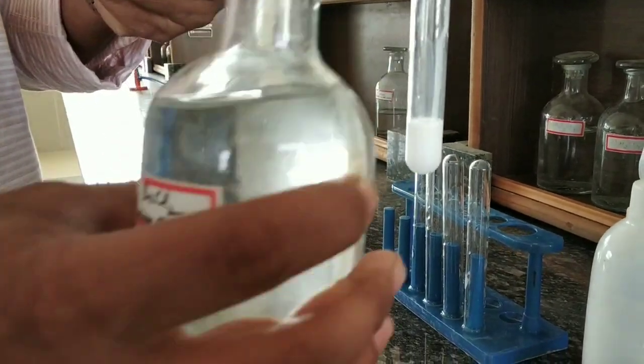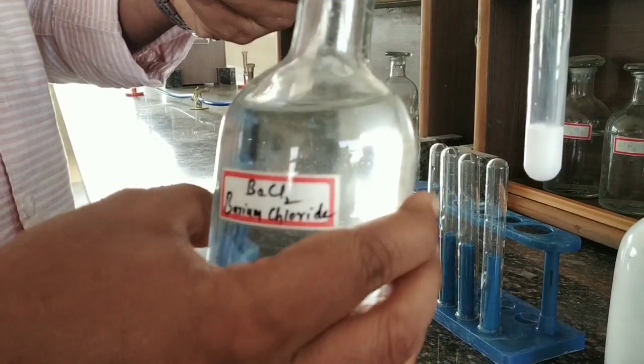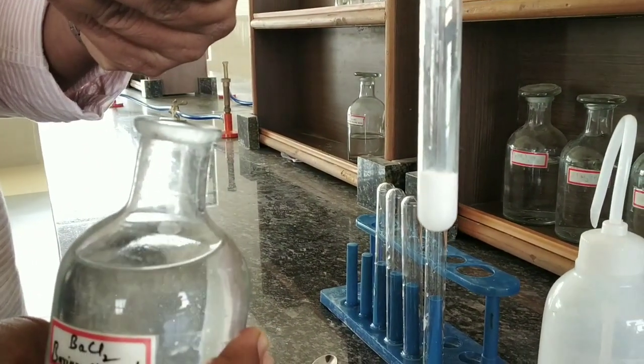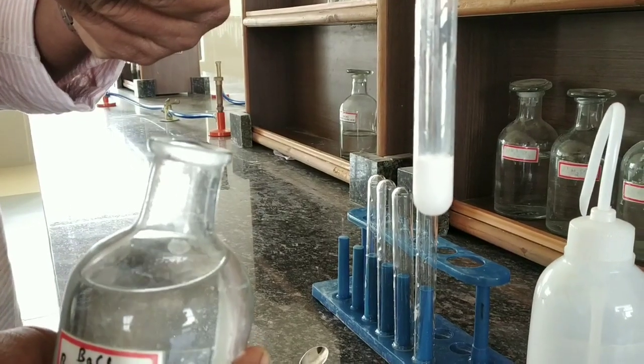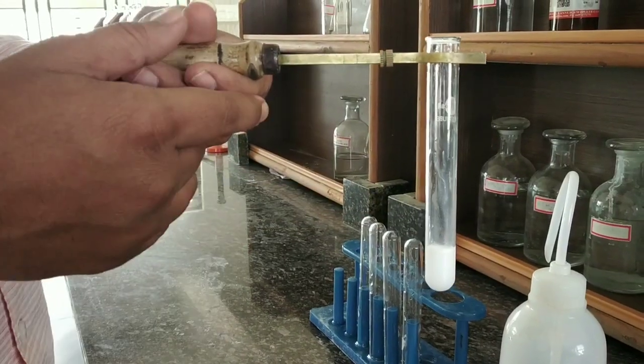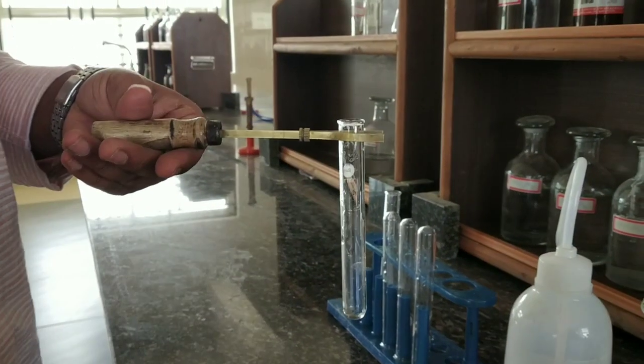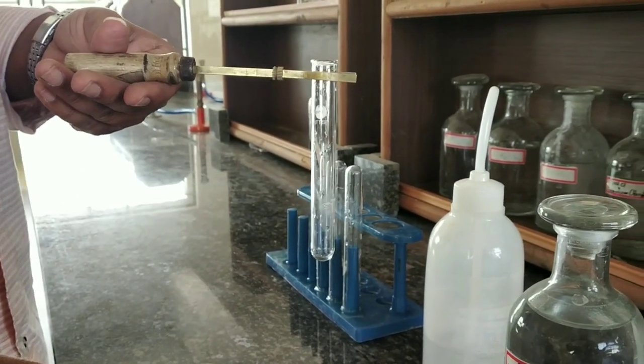The formation of white precipitate tells us that when barium chloride is added to the given salt, which contains sulfate ion, this barium chloride turns into barium sulfate. This indicates the presence of sulfate ion.